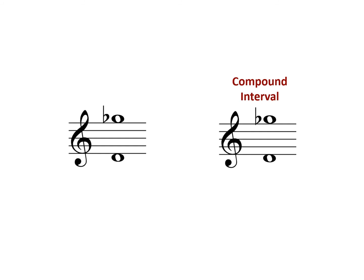Here's another example. The compound interval reduces to a diminished fourth. When I add 7 to the number, I'll get a diminished eleven.